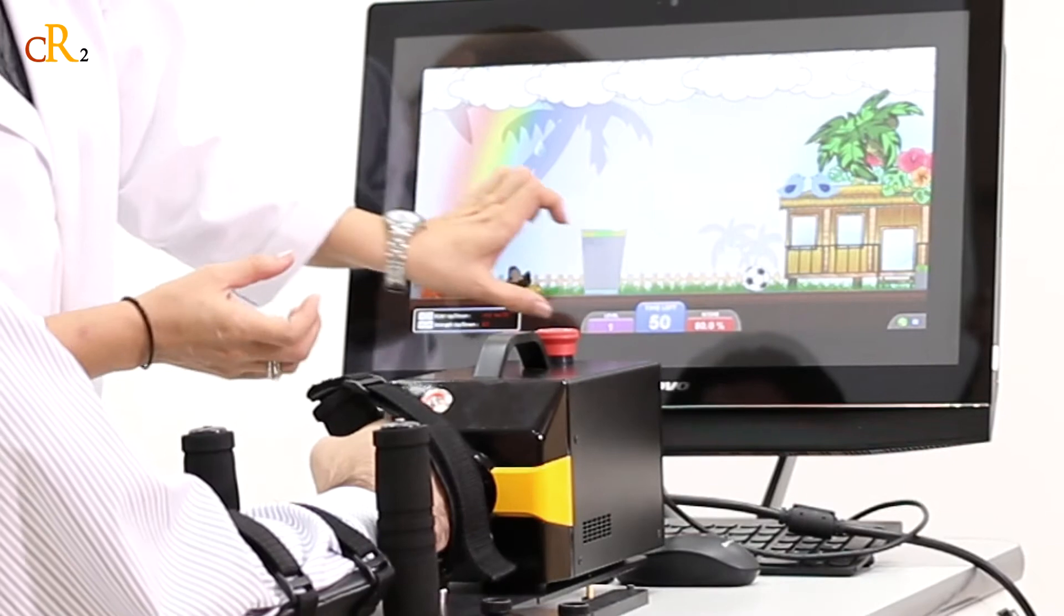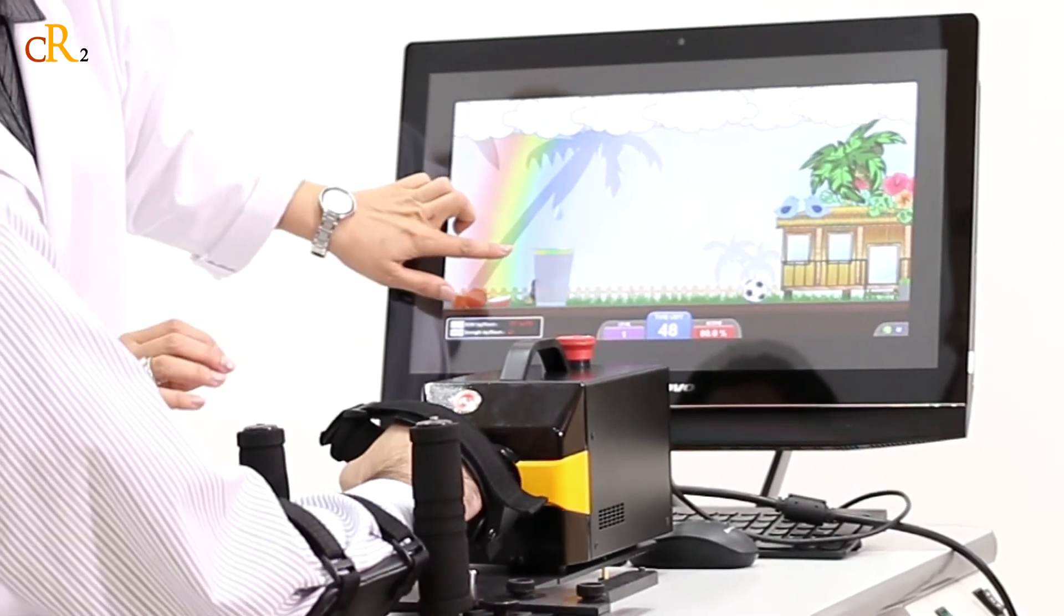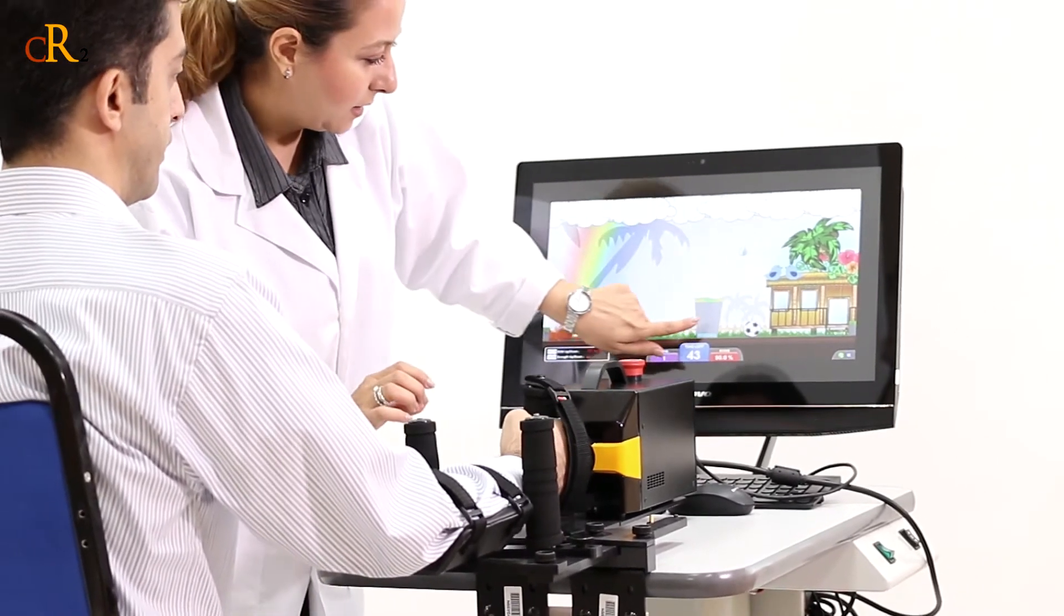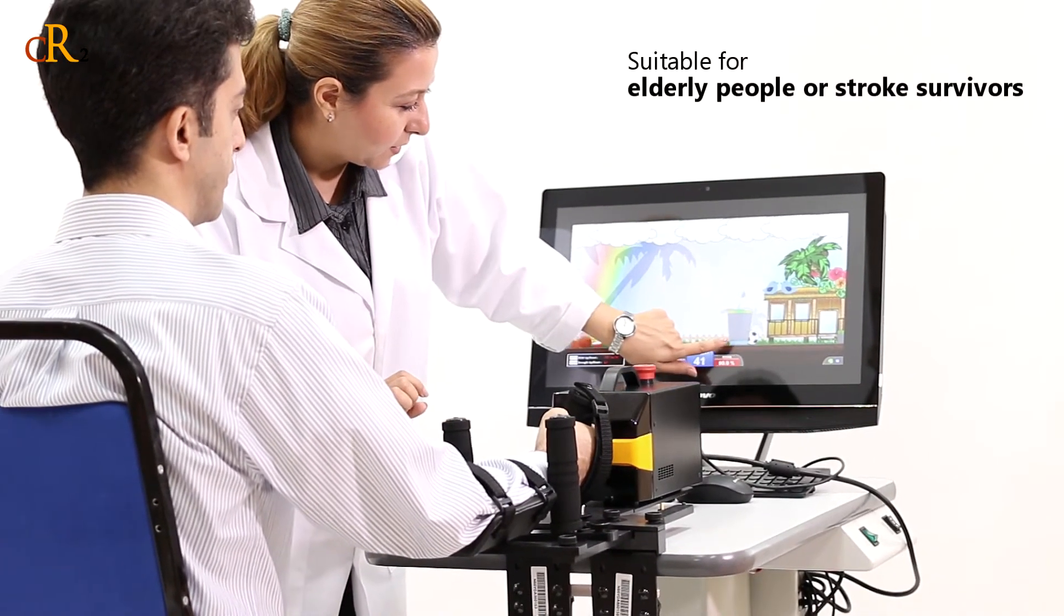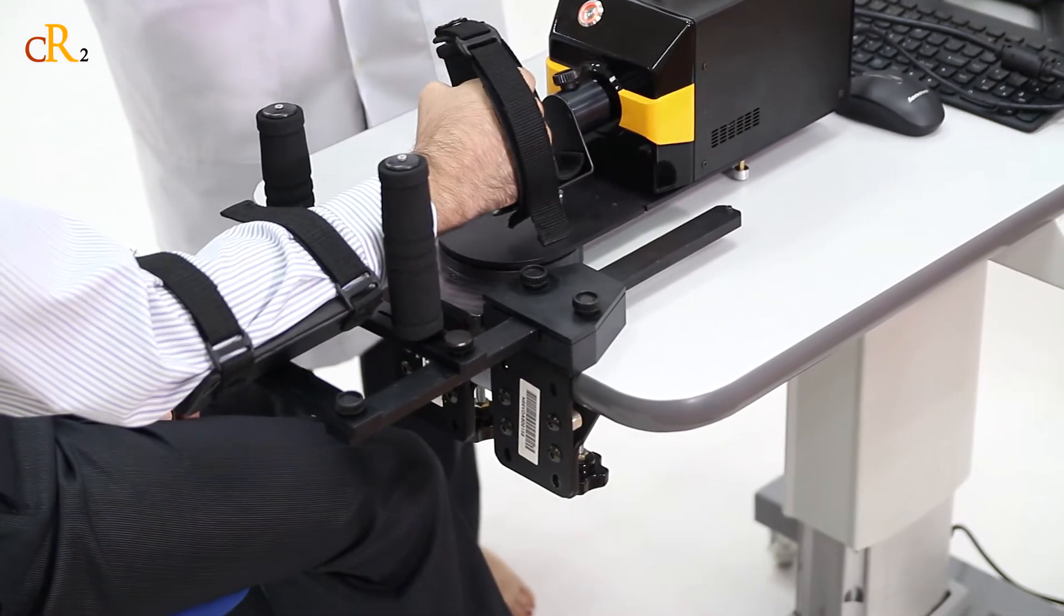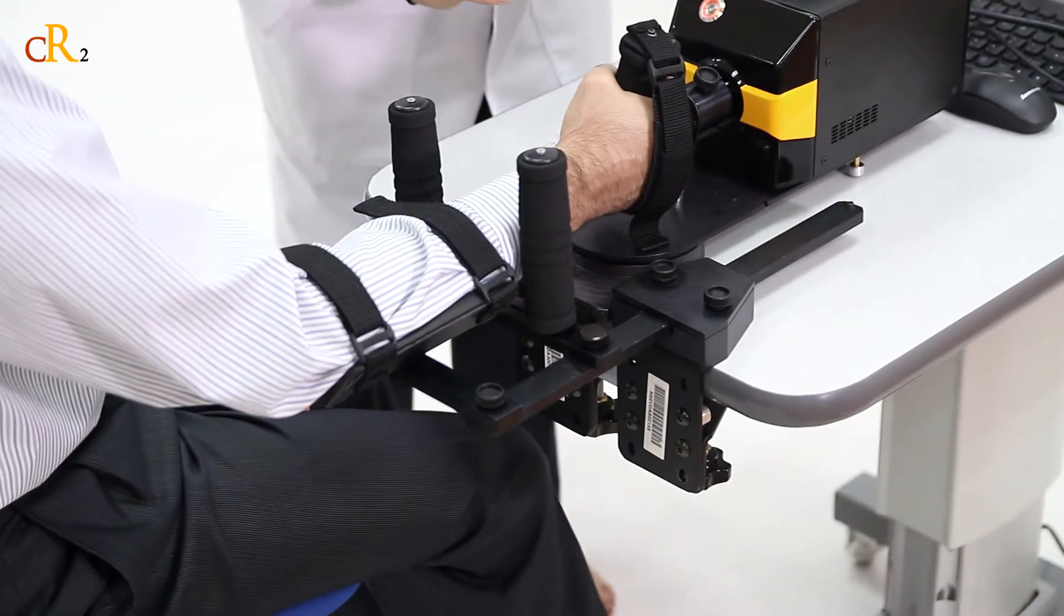The robot provides assistance when needed and resistance to strengthen muscles as users improve. The device can be used by elderly people, stroke survivors, and others who need rehabilitation training or exercises for the hand.